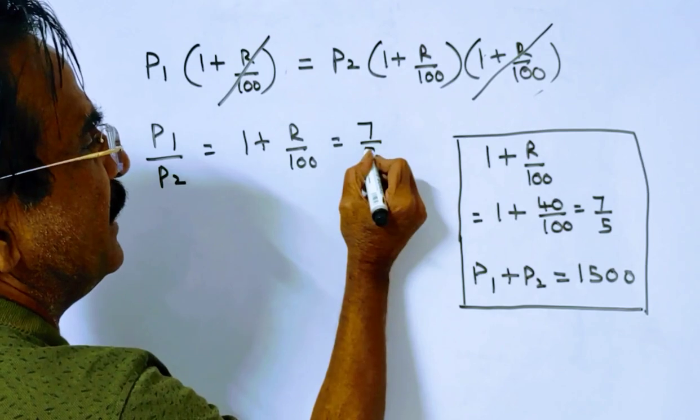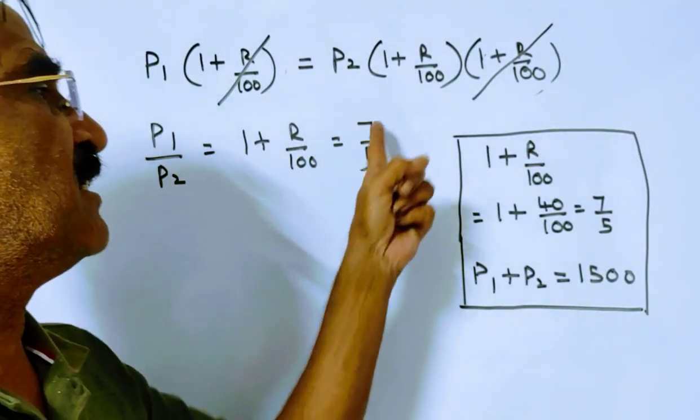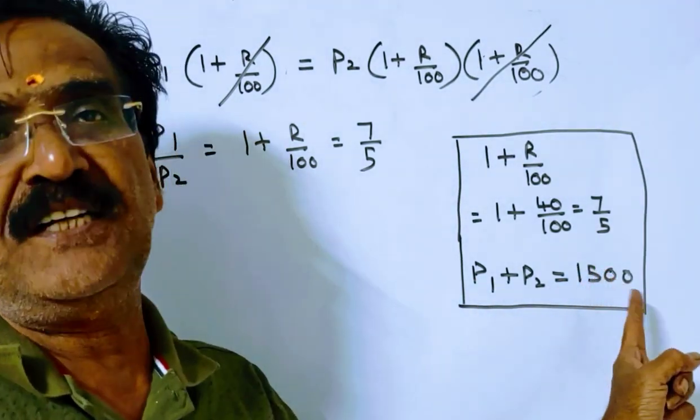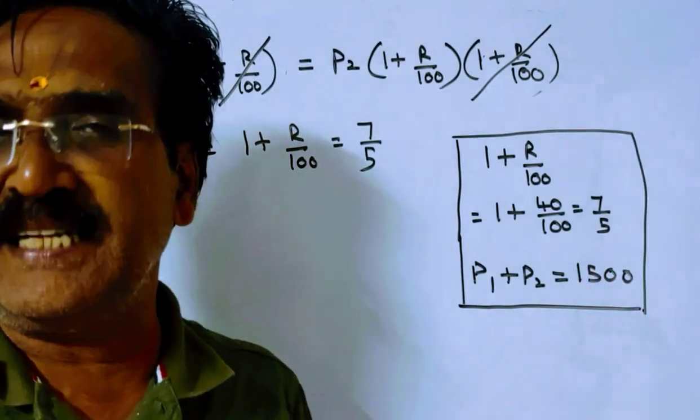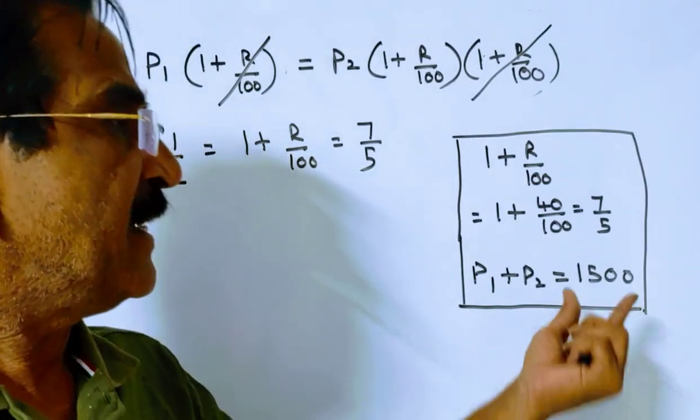So 1 plus R by hundred is equal to 7 by 5. Friends, P1 into P2 is equal to 7 by 5. And we know P1 plus P2 is equal to 1500. The sum of the present worths, the sum of the present worths, that is the total amount to do, is 1500.